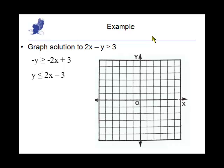We use the slope-intercept form to graph the line. So the y-intercept is at negative 3, and the slope is 2 over 1. And this time, since we have the equals part, we draw a solid line.